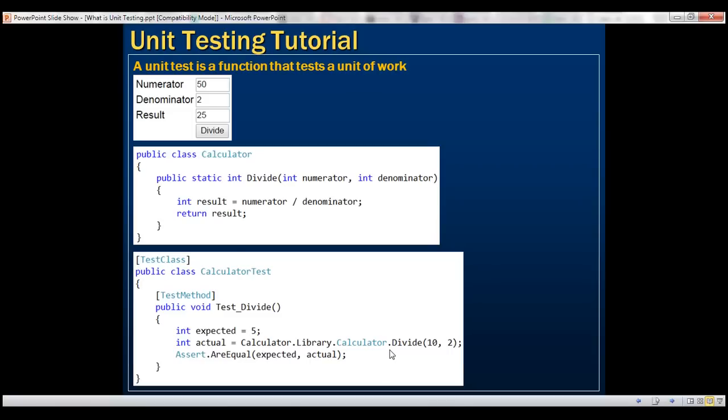So when this function executes, the actual value—what we get—is stored in this variable. When we divide 10 by 2, what is the expected value? That's 5. So the expected value is present in this variable and the actual value is going to be in this variable.